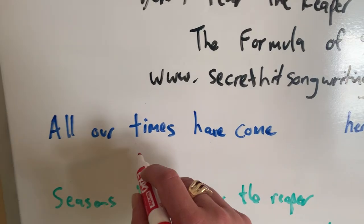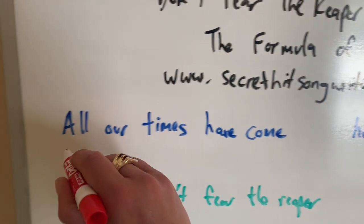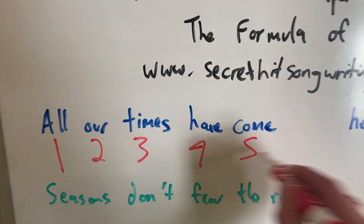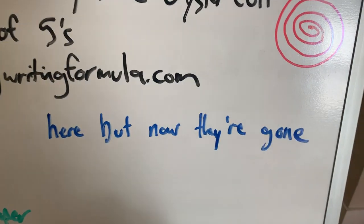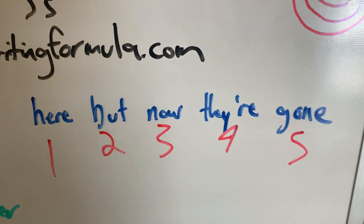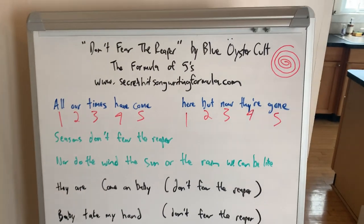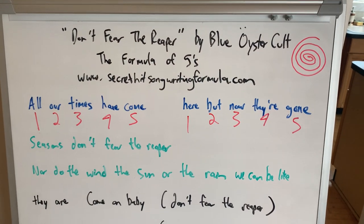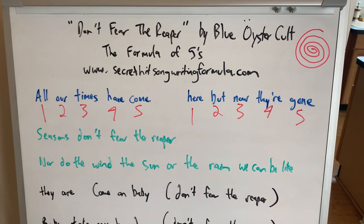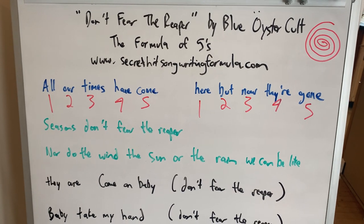All our times have come. Pretty easy to count the one, two, three, four, five. There, right? Here, but now they're gone. Okay, so the verse written in blue there, pretty short verse written in blue, but it's already clearly established itself as a five, okay, based on two clear and obvious five note motifs.